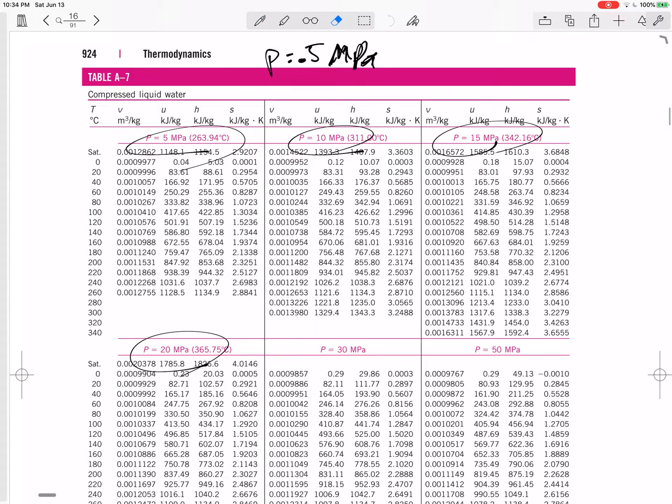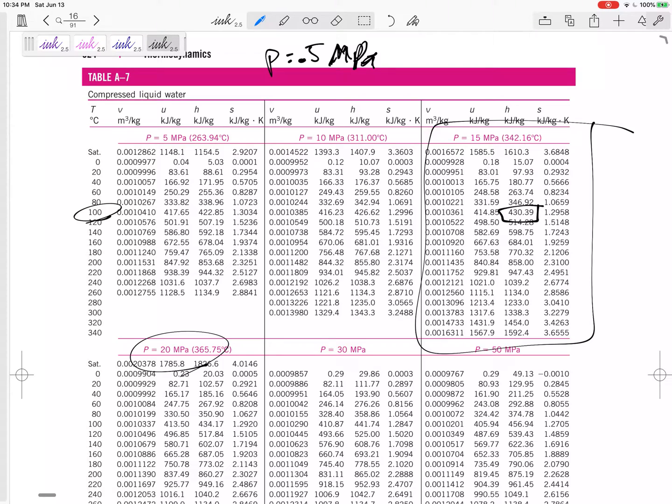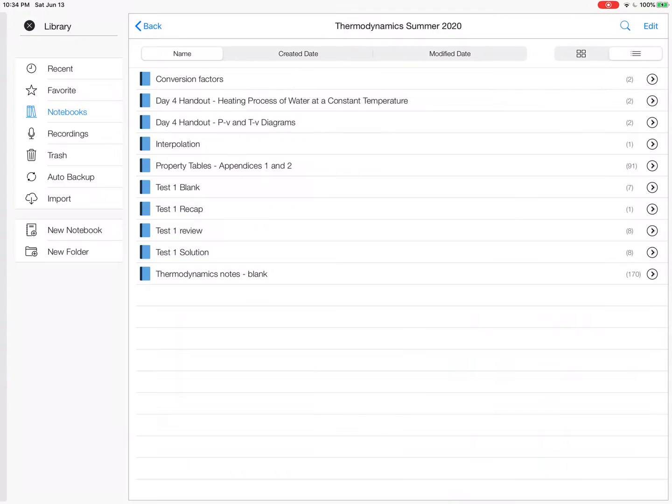We haven't used table A-7 too much, but we've got a pressure of 15 MPa. So right here, we've got a temperature of 100 degrees C. We don't even have to interpolate. The H value right here, 430.39.